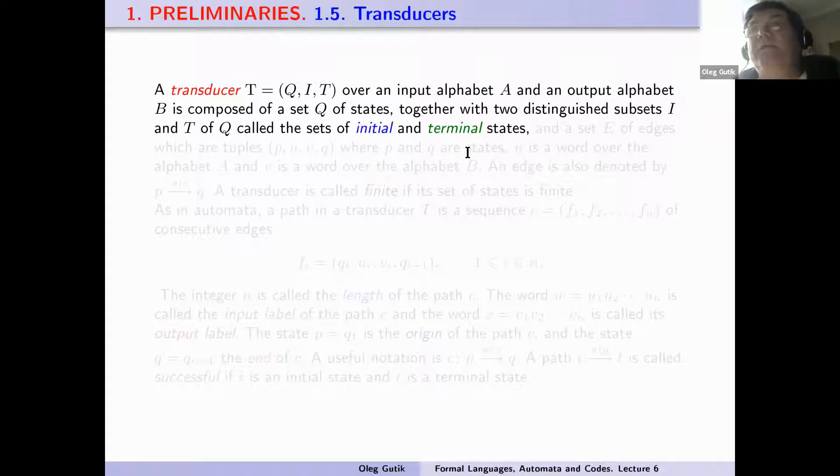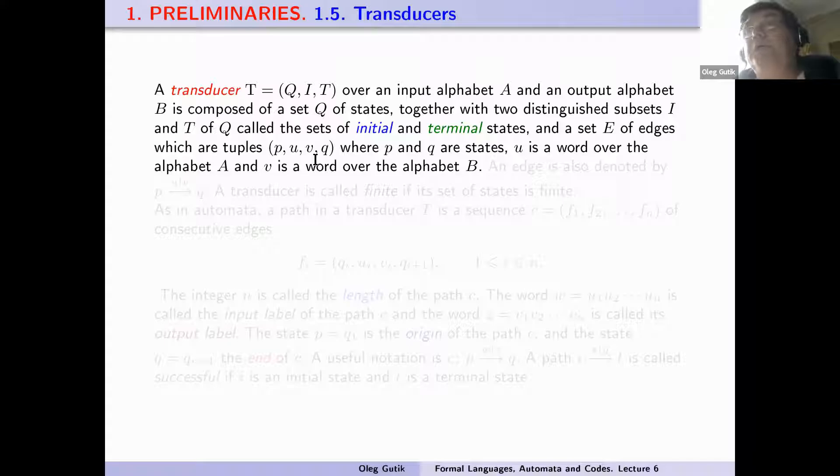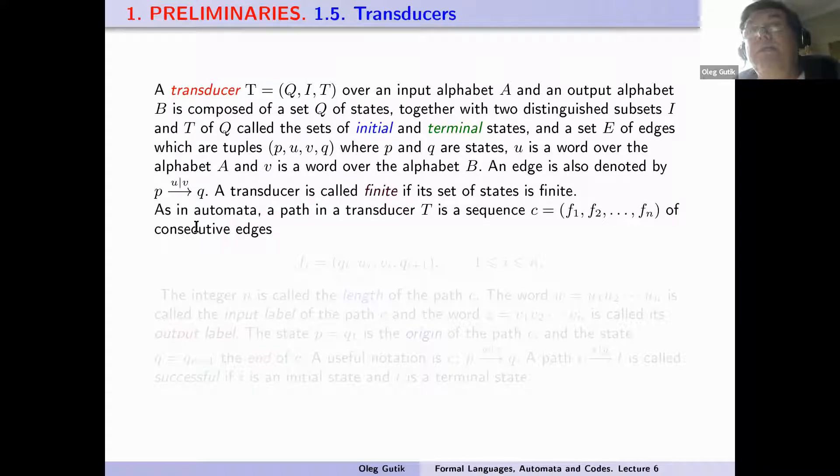And a set E of edges which are tuples (p, u, v, q), where p and q are states, u is a word over alphabet A, and v is a word over the alphabet B. An edge is also generally denoted by the following way. A transducer is called finite if its set of states Q is finite. As in automata, a path in a transducer T is a sequence C.